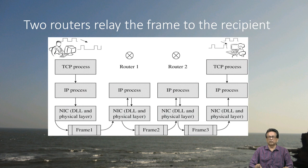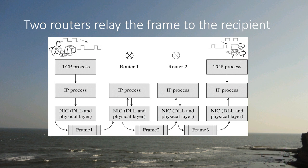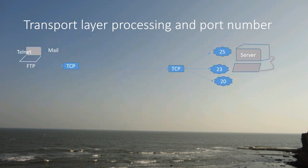Remember the model we have already looked at: the sender, receiver, and intermediary routers. We will continue with this model. As noted, the model is the same for multiple routers as well — it does not change much.